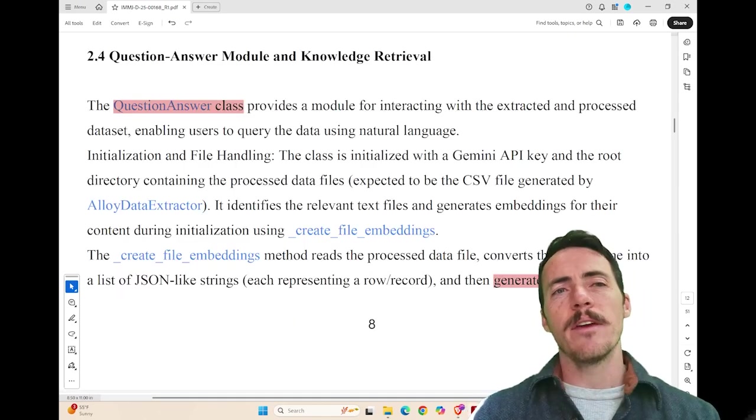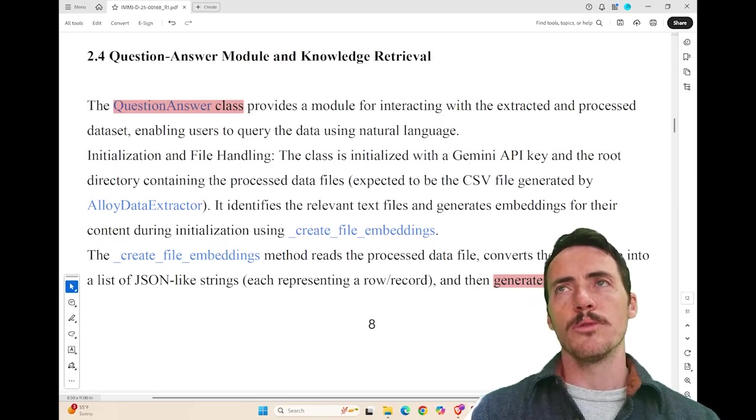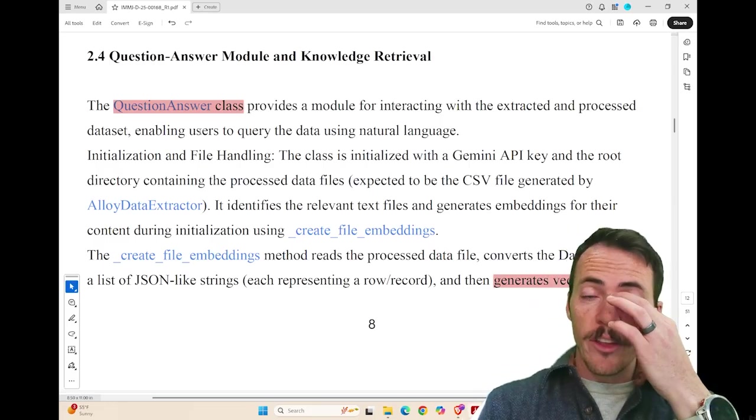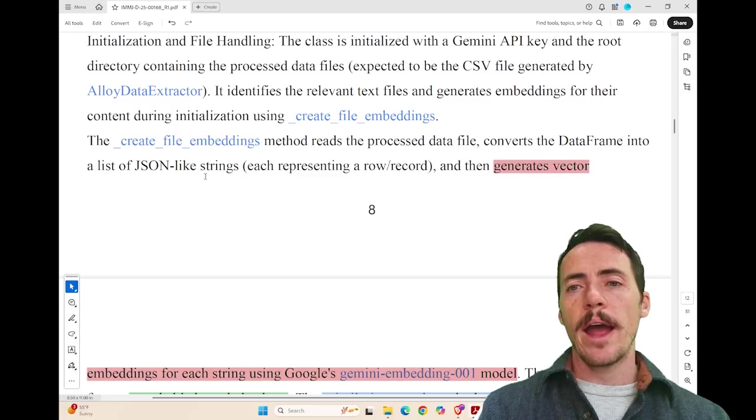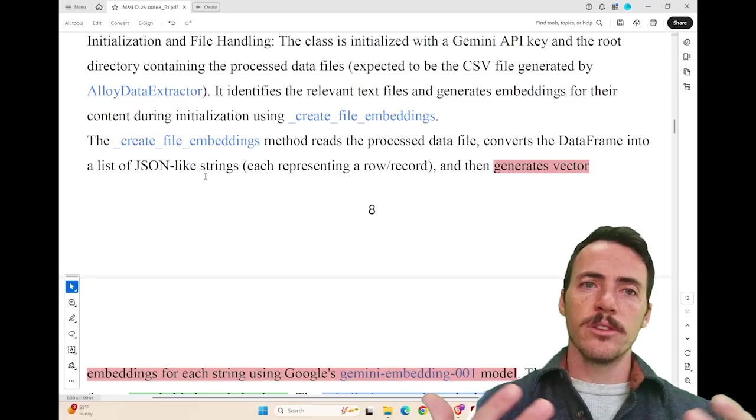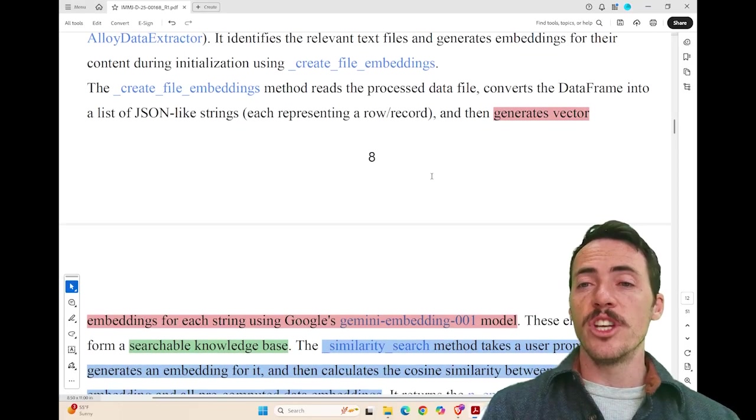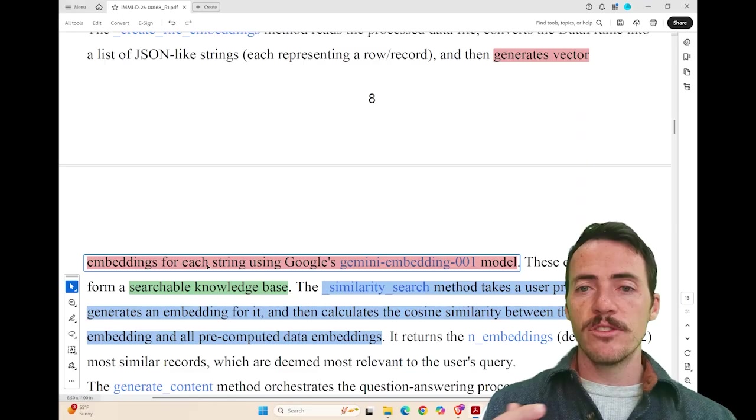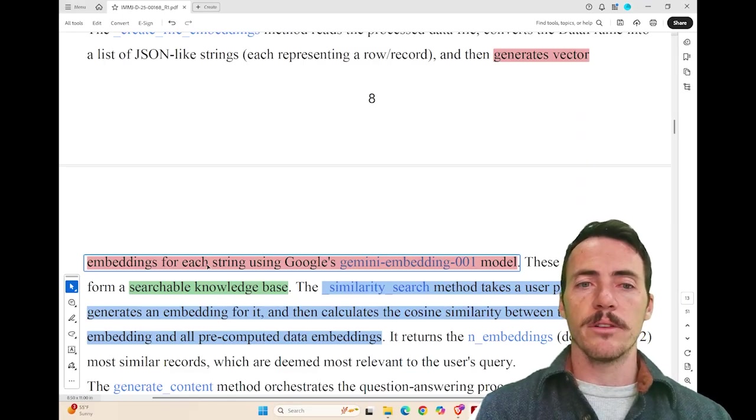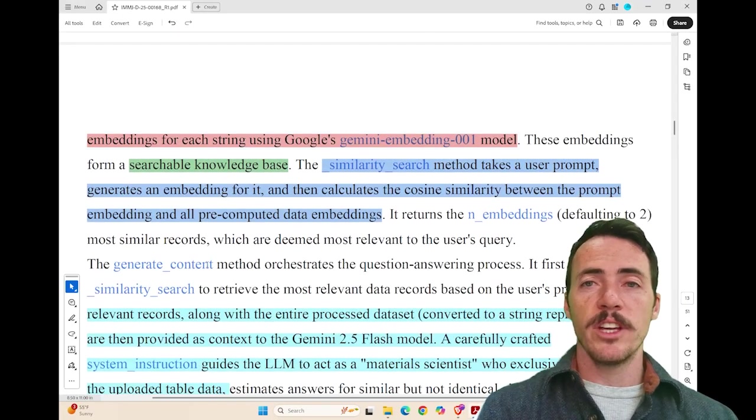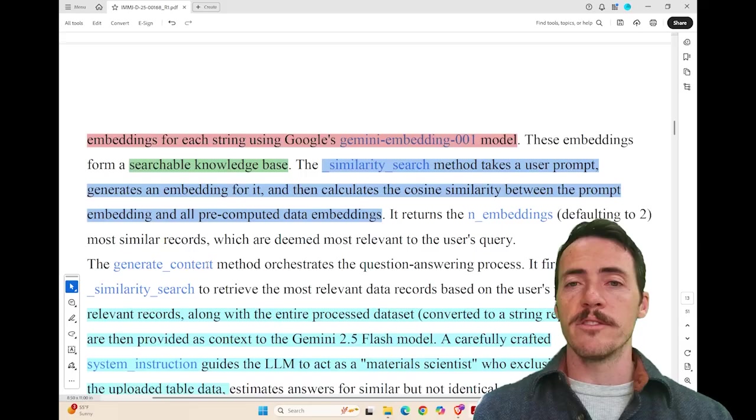Now, the second thing that they build is this question and answer module for knowledge retrieval. And when you start to look at how they built this, you realize it's essentially a RAG system. For all the potential information, they go ahead of generating vector embeddings for each string. They use Gemini's embedding model. Once you have those, you put together a database. In RAG world, we call this the vector database.